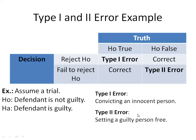Type 2 error, instead, on the flip side, would be setting a guilty person free. So the person is guilty, but we fail to reject the null hypothesis and we set a guilty person free.